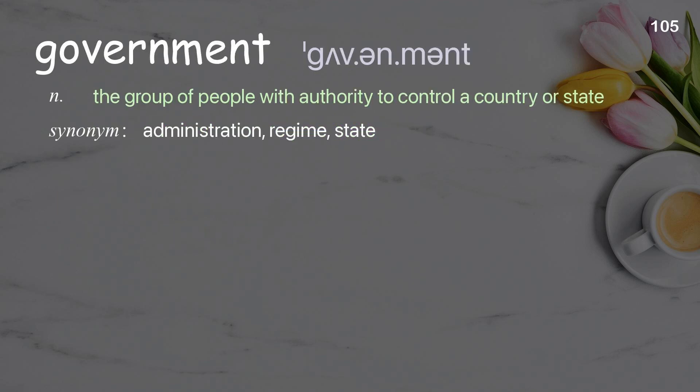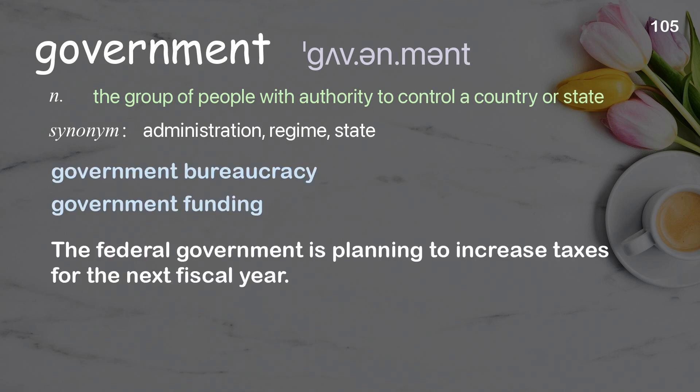Government: the group of people with authority to control a country or state. Examples: government bureaucracy; government funding. The federal government is planning to increase taxes for the next fiscal year.